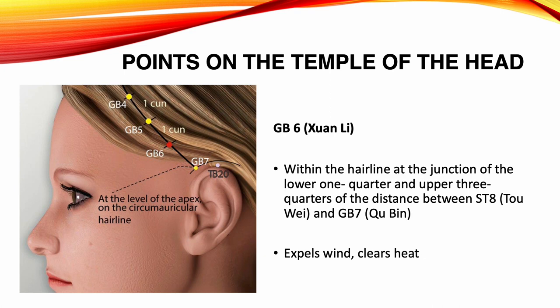Gallbladder 6, Shuan Li. Location: within the hairline, at the junction of the lower 1/4 and upper 3/4 of the distance between Stomach 8 and Gallbladder 7. Functions: expels wind, clears heat. Indications: migraine, face pain, tinnitus, blurred vision, redness and swelling of the eyes, insomnia.